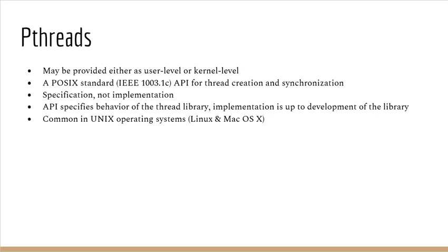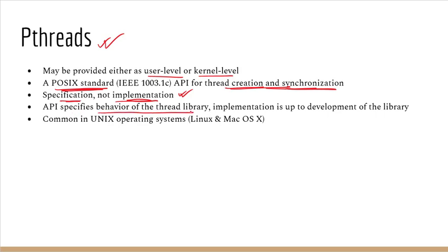This is the difference between user-level thread library and kernel-level thread library. As an example, PThreads — POSIX threads — are a specific kind of thread that can be provided in both user space and kernel space. PThreads follow the POSIX standard for thread creation and synchronization.